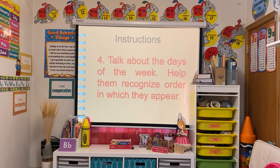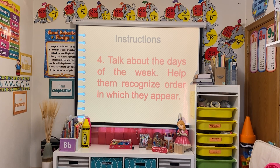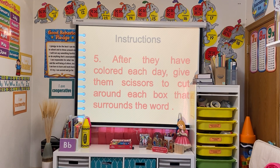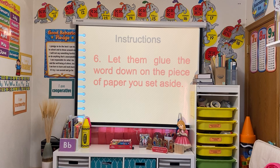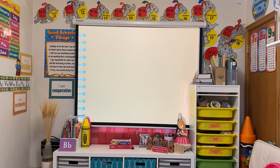Give them markers or crayons to color the words. Then talk about the days of the week and have them recognize the order in which they appear. If you have a poster, or you go back to the Super Simple Songs on YouTube. After they have colored each day, it's time for them to use the scissors to cut around each box that surrounds the word, and later they will glue the words down onto a piece of paper — like a construction paper — set aside.